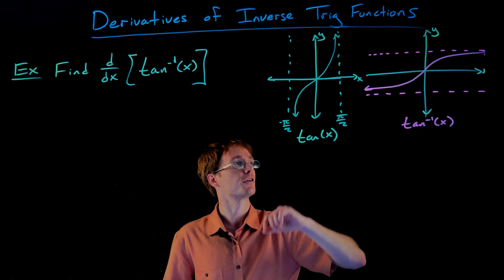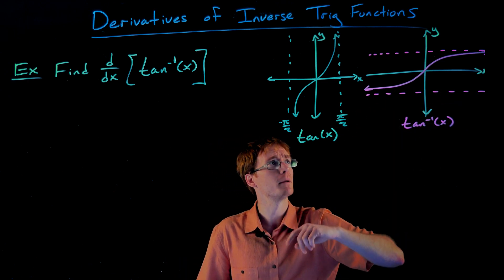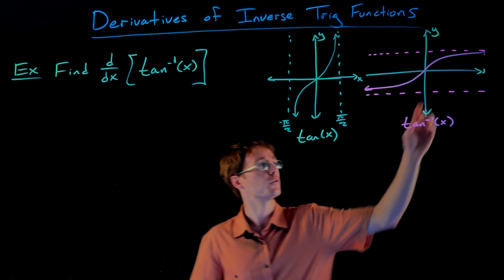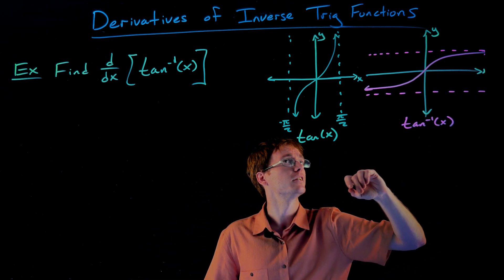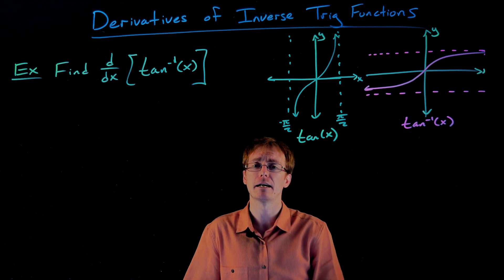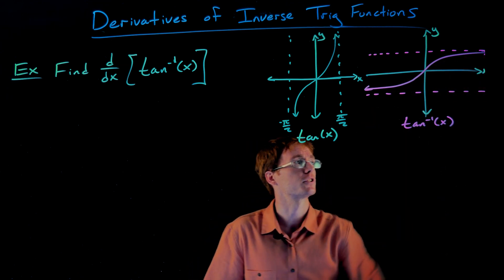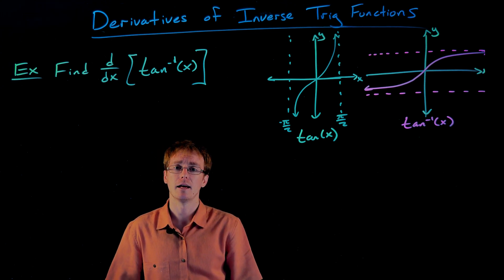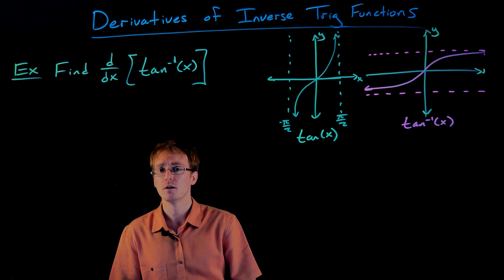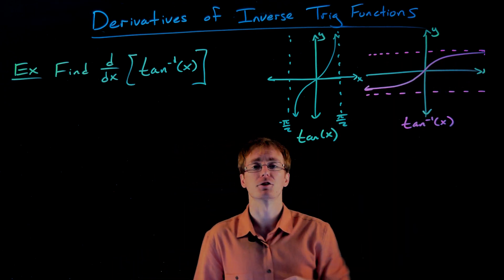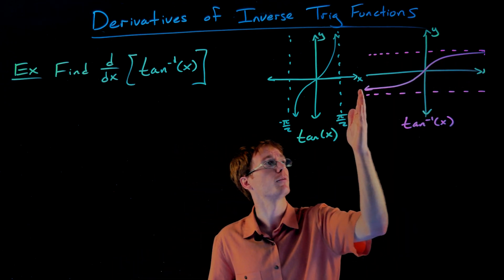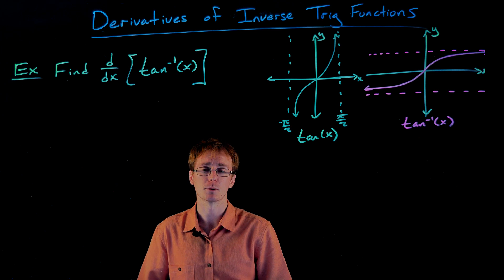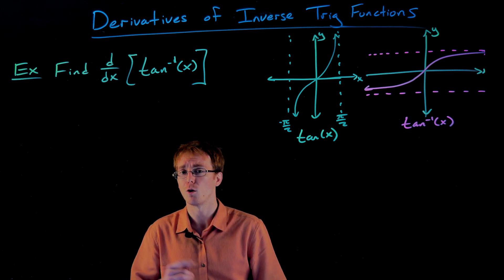Looking at the graph of our inverse tangent function, we can see its domain is all real numbers, since that was the range of our tangent function. And the range of our inverse tangent function is the restricted domain of our original tangent function. So our inverse tangent function is only ever going to output values between negative pi over 2 and positive pi over 2. We can also see from the graph that as we move from left to right, the graph is always going up, so it is an increasing function.